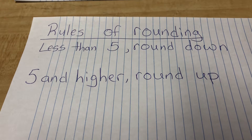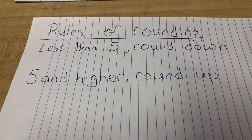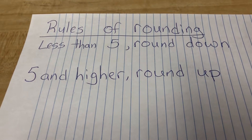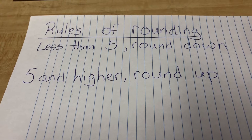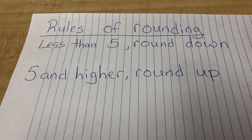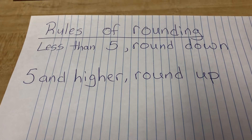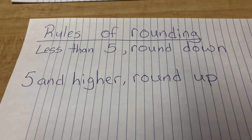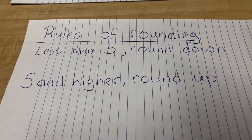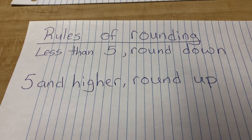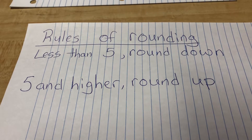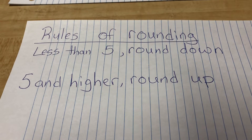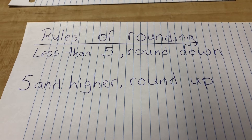We'll talk a little bit more about what exactly these mean momentarily, but the two main rules of rounding: less than five means you need to round down, five and higher means you need to round up. So take a screenshot, write these down, pause the video — whatever you need to do.